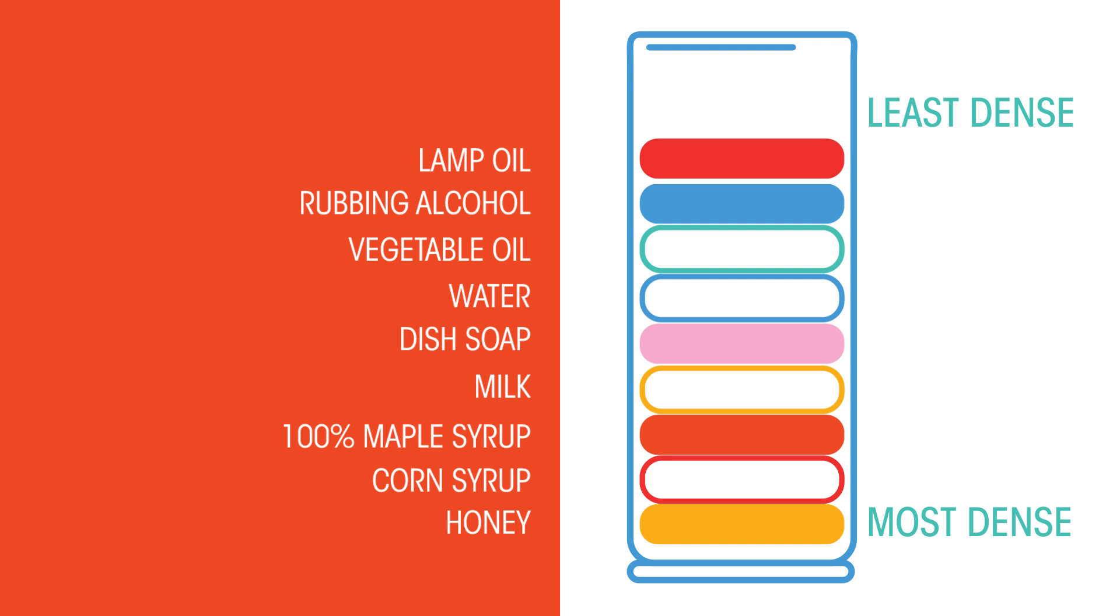Look at this density tower of different liquids. The honey is most dense so sinks to the bottom, whereas milk is in the middle and lamp oil is the least dense.